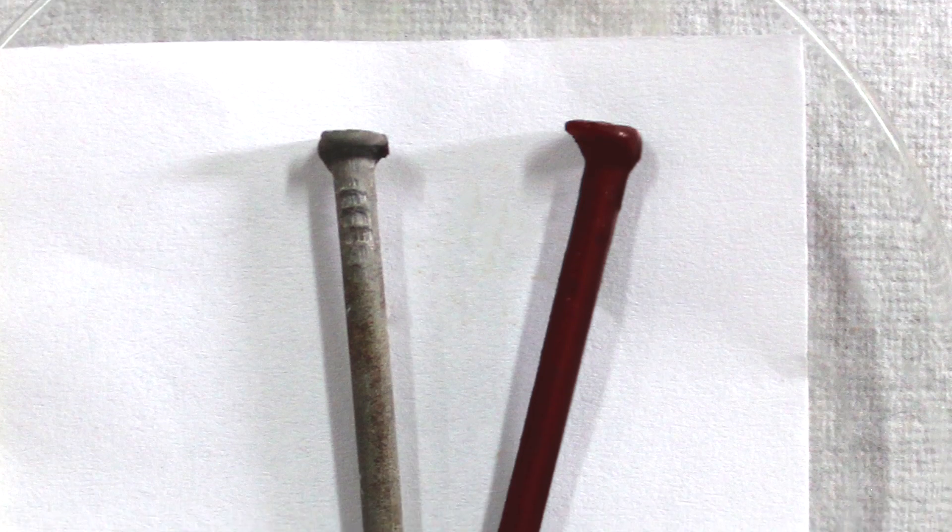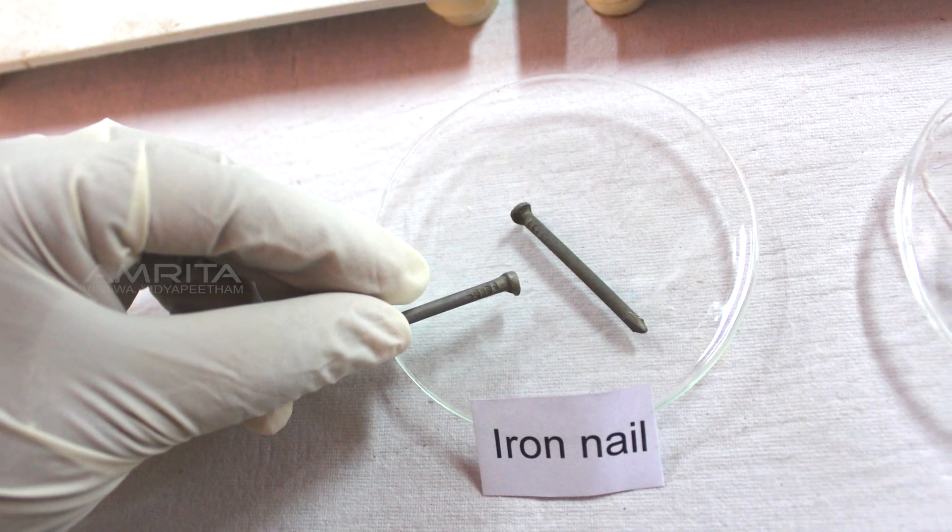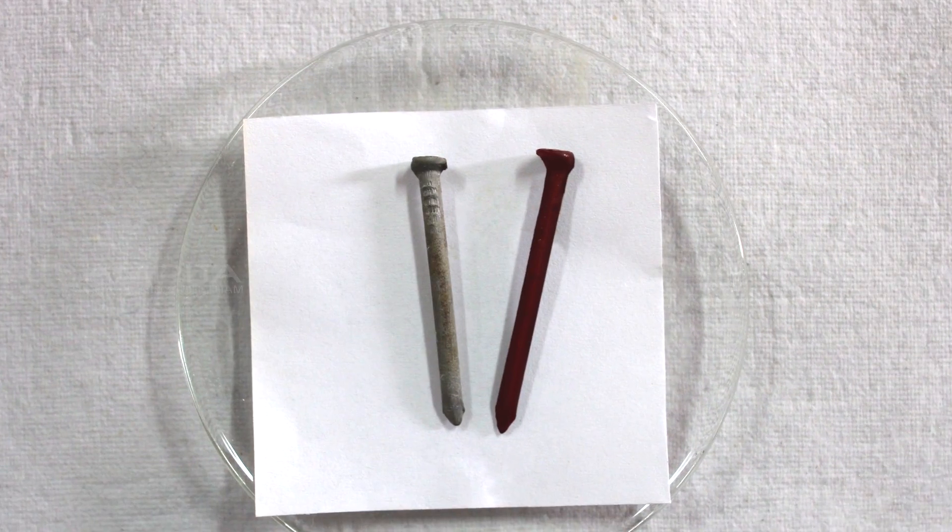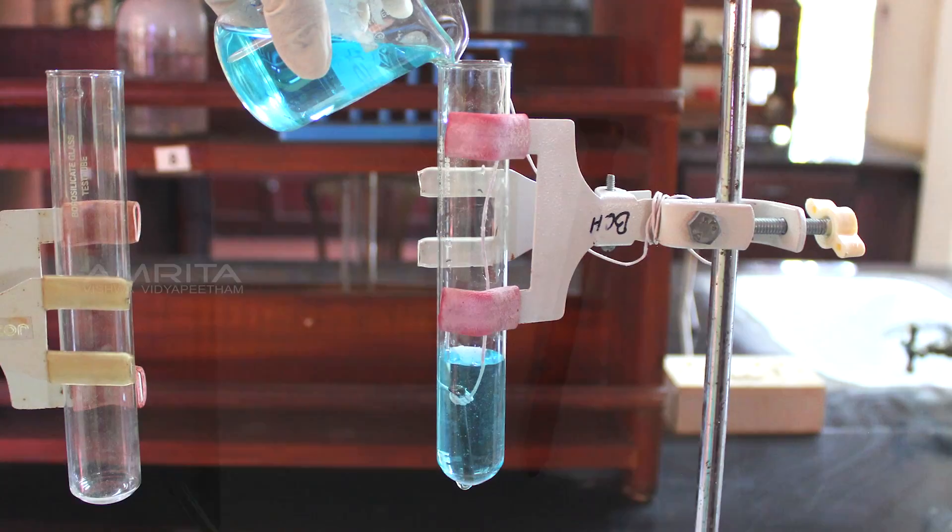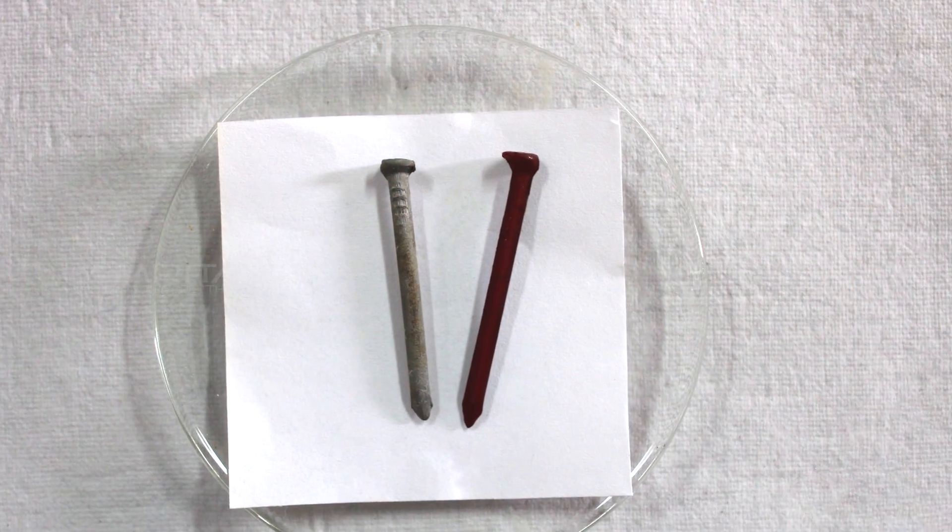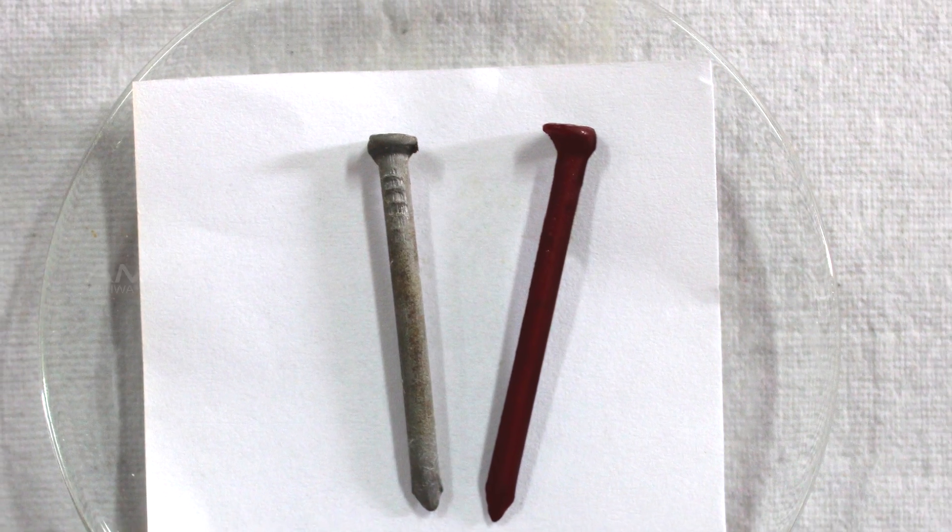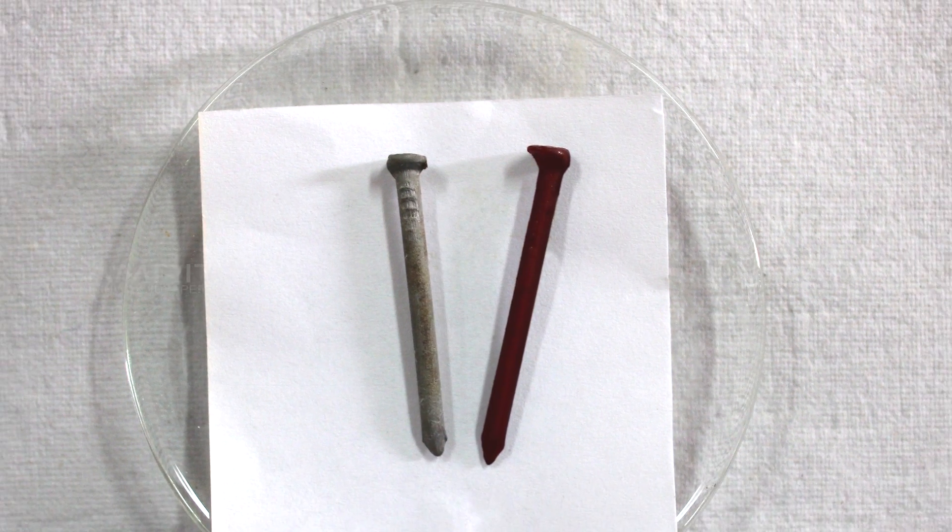Compare the two nails placed in the watch glass. The iron nail placed in the watch glass shows a greyish colour of iron whereas the iron nail dipped in the copper sulphate solution shows a brown coating. This indicates that copper is deposited on the iron nail by displacing iron.